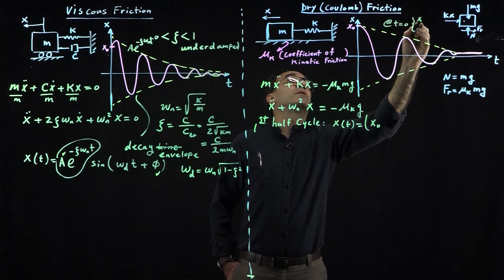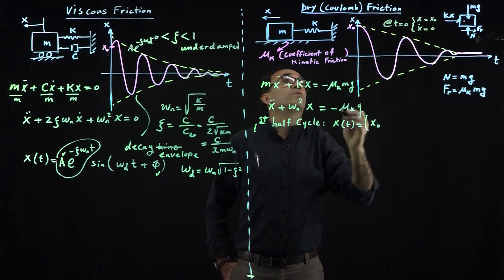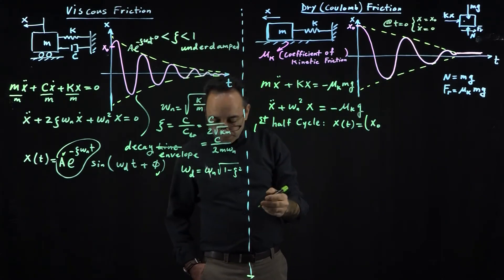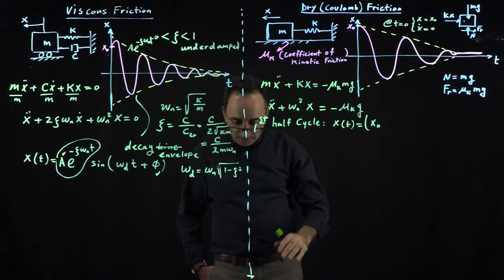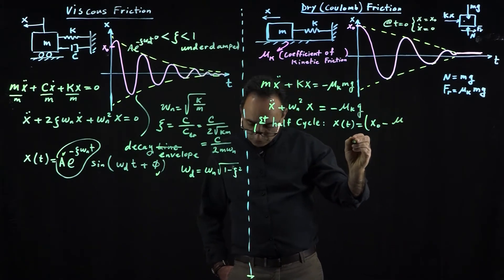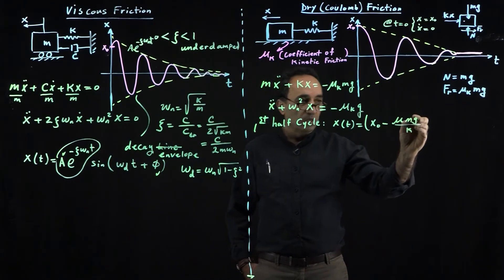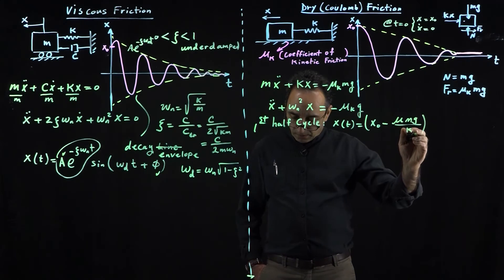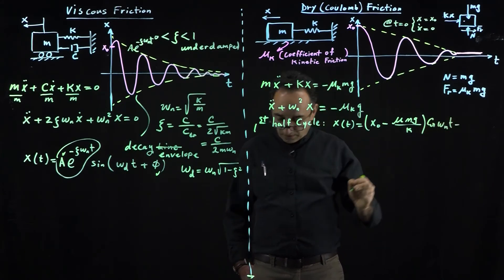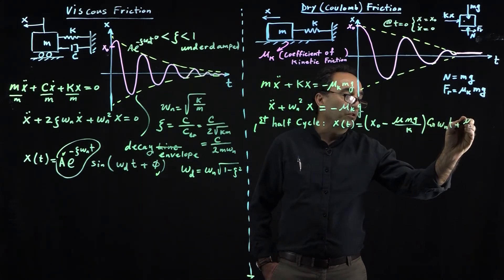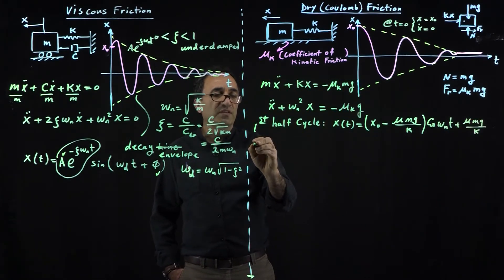x(t) equals—we are assuming initially at t equals zero, x is equal to x_0 and initial velocity Ẋ equals zero, so no velocity here. You just give it a disturbance of some initial position x_0. This becomes x_0 minus mu mg over k times cosine(omega_n t) plus the particular solution term mu mg divided by k. This is true only for the first half cycle.